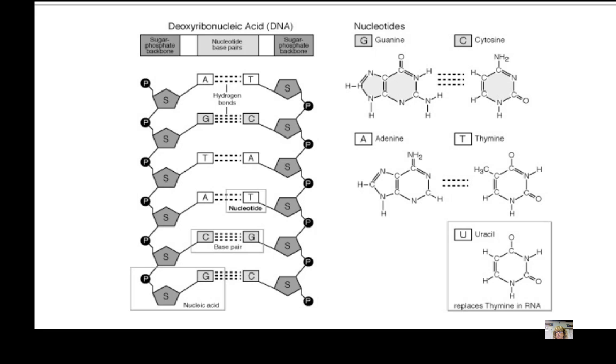The phosphate group of one nucleotide bonds to the sugar of the next nucleotide by dehydration synthesis. RNA is a single strand. DNA is a double helix.